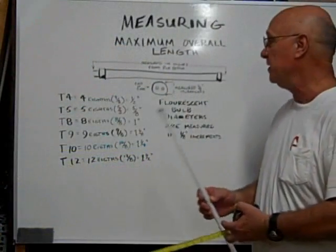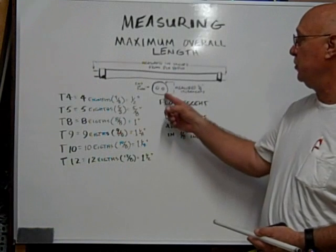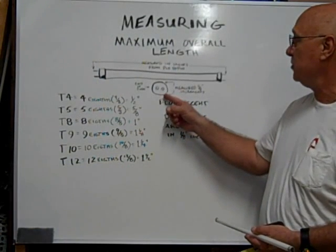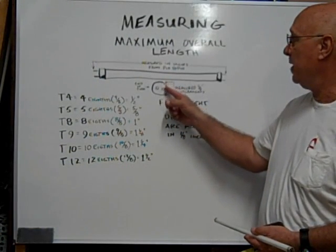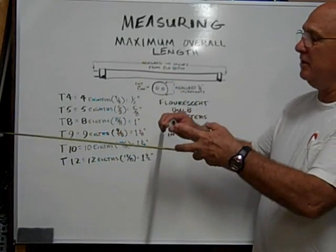To measure the diameter of a fluorescent tube, you measure up and down across the end of the bulb.